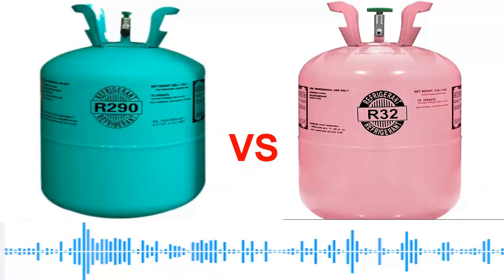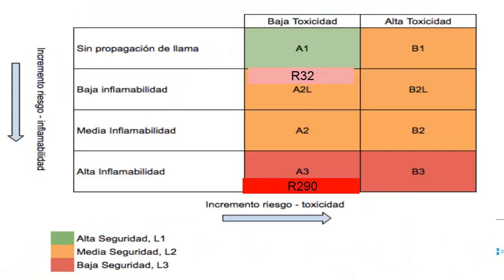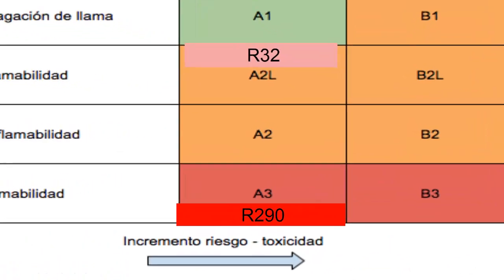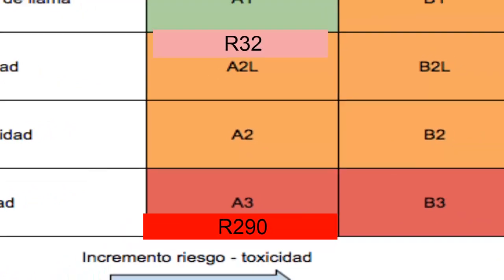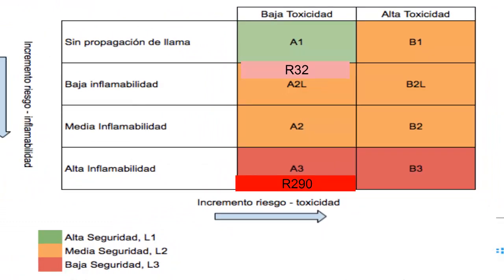Now we can talk about flammability. Both gases are flammable, but the R32 is less flammable than the R290. The R290 classification is 3, while the R32 is 2L. They are not toxic, but both are flammable, although the R32 is less flammable than the R290.